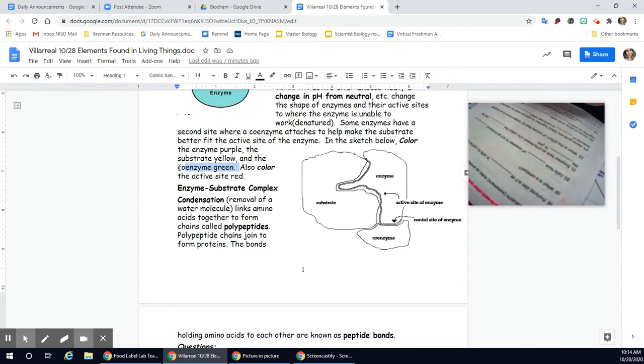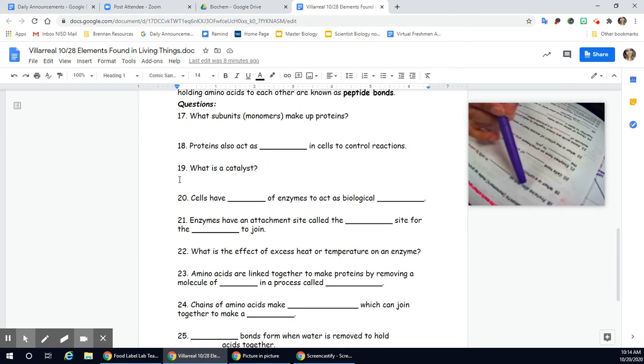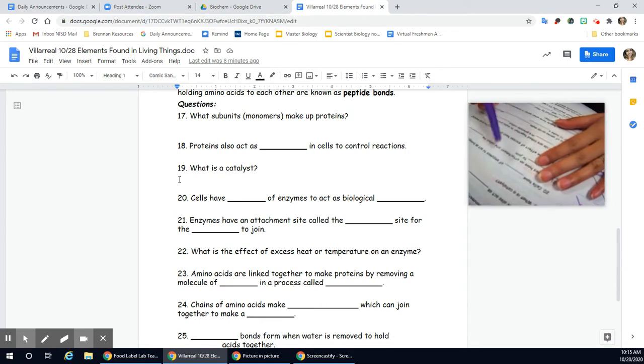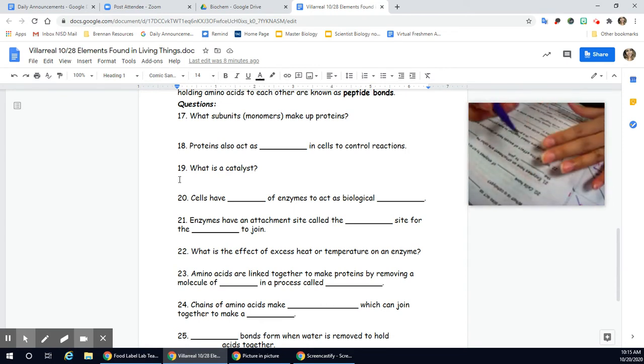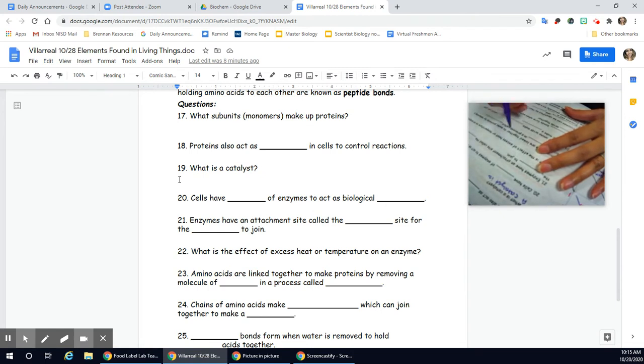I'm going to read your questions for you. However, I'm not going to answer them. You have your answers in the reading. Question 17, and I'm going to scroll down on the Google Docs so you have this. Question 17, what subunits, those are monomers, what monomers make up proteins? Question 18, proteins also act as what in cells to control reactions? Number 19 is a free response. What is a catalyst? So you need to start with a catalyst is. 20, cells have blank of enzymes to act as biological blank.